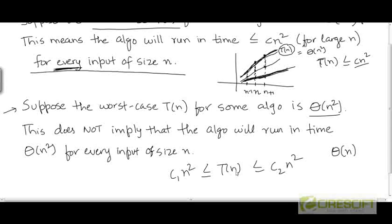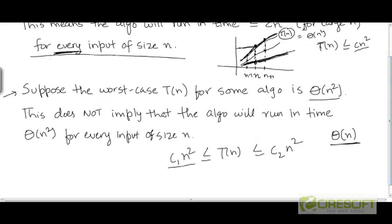Just because t(n) is greater than or equal to c₁n² — meaning the worst case point lies above the curve c₁n² — does not imply that the bottom-most point also lies above c₁n². That is not necessarily true. For insertion sort, the best case is Θ(n), which runs significantly faster than the worst case Θ(n²). So just because the worst case is Θ(n²) does not mean the algorithm runs in time Θ(n²) for any input of size n. This is only a statement about the function representing the worst case running times.